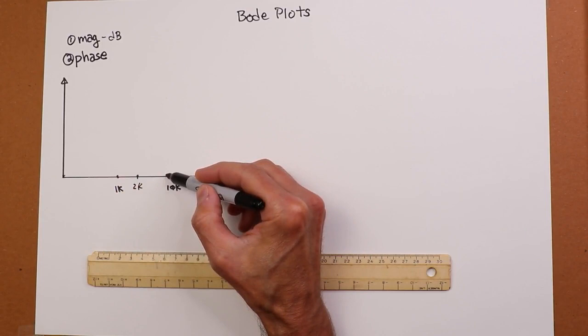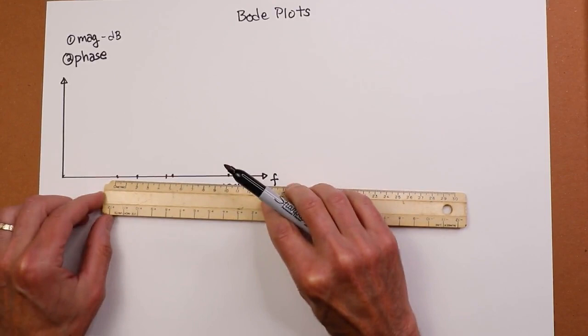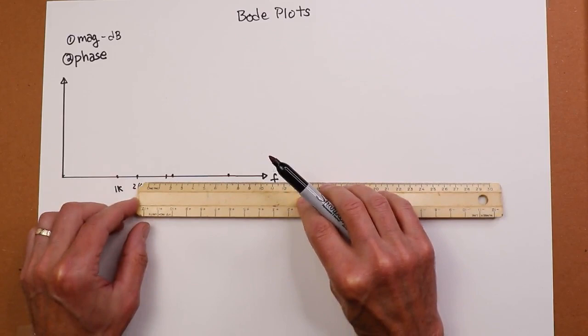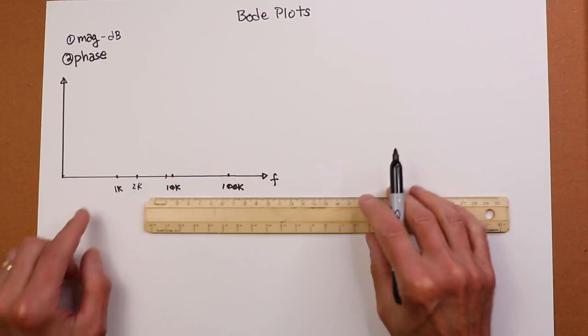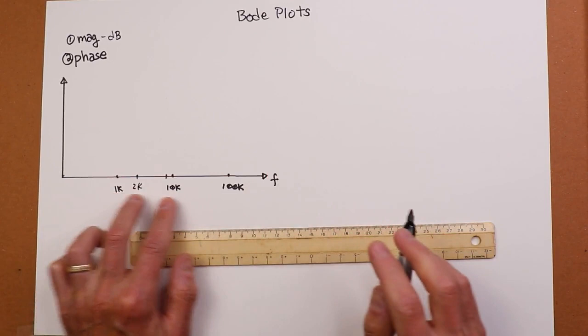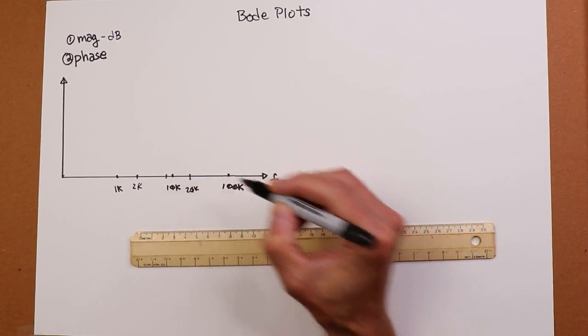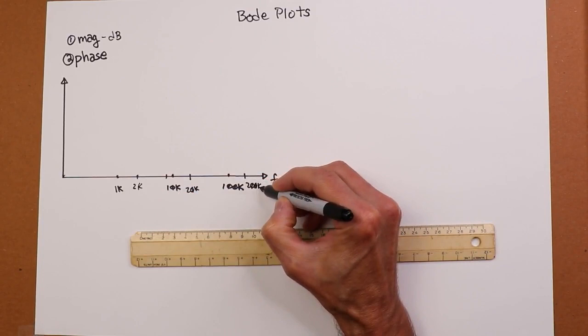And then if I took that spacing and I went backwards, it would be half of 10. That would be 5k over here. But here's the important thing. If that's 2k, 1k to 2k, if that's a factor of 2, then that same distance would give me 20k over here. And that same distance would give me 200k over here. That's how the frequency axis is laid out.